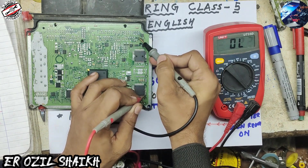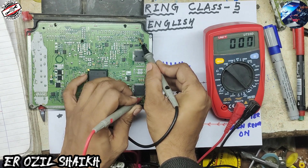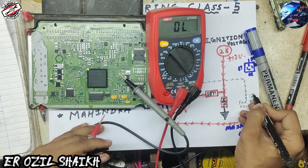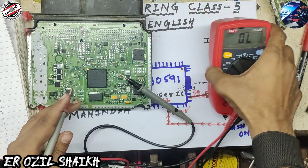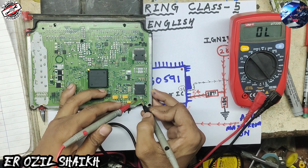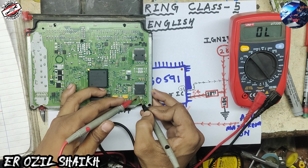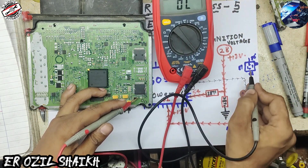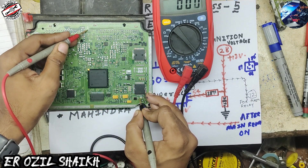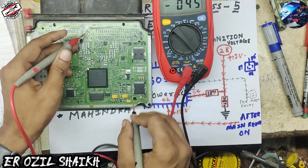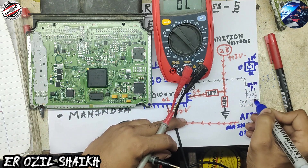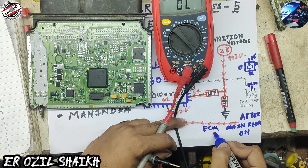Pin 56 goes to ECM pin number 72. And here, pin 42 is our main supply — the 12-volt main supply. When the main relay is on, this voltage comes from ECM pin number 1 to IC pin number 42. So we can write: ECM pin 72 and ECM pin 1.